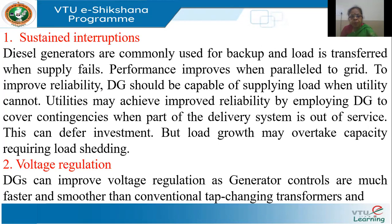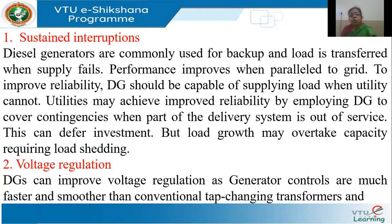First let us take sustained interruptions. The most popularly used DG for backup is the diesel generator. Big apartments, commercial complexes, campuses, hospitals — all of them have a diesel generator. There is a transfer of power from the utility to the diesel generator as soon as the utility supply is interrupted. Rarely does the DG work in tandem with the utility. We don't normally operate a DG and the utility together. The load is transferred from the utility to the diesel generators as and when there is a disruption of the utility power.